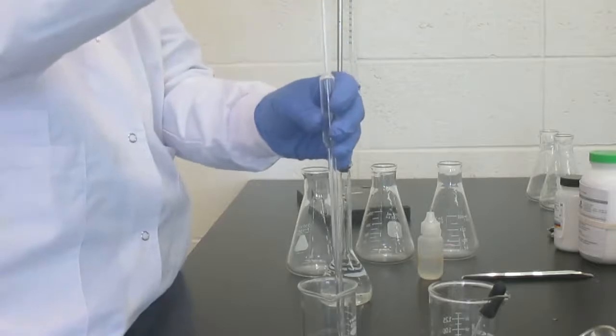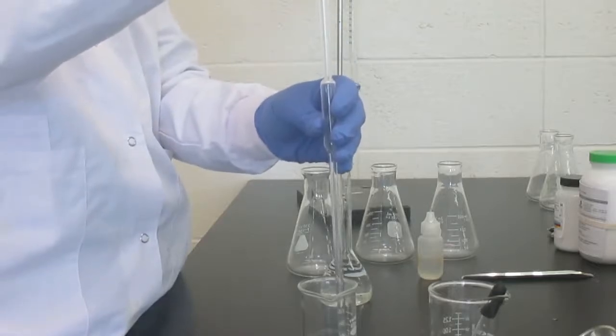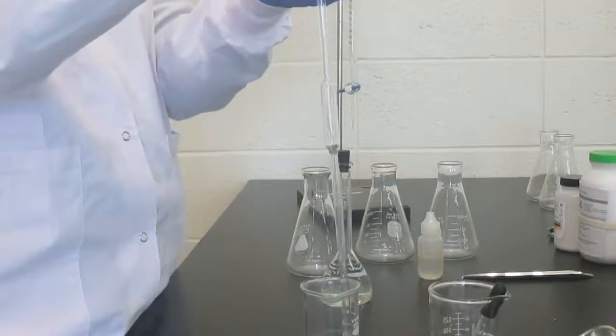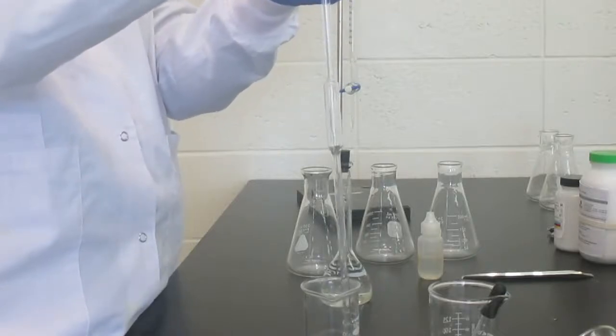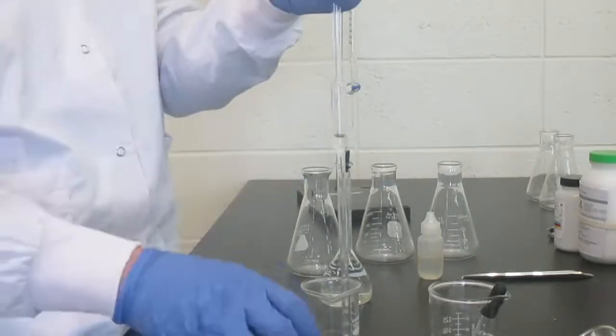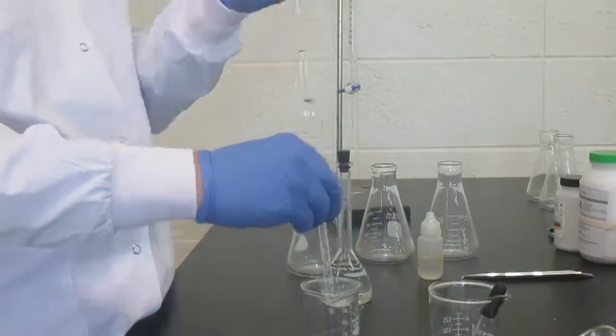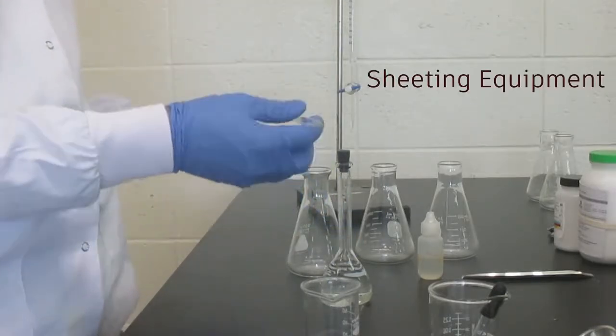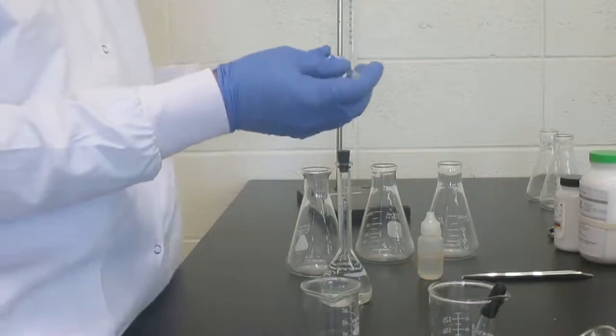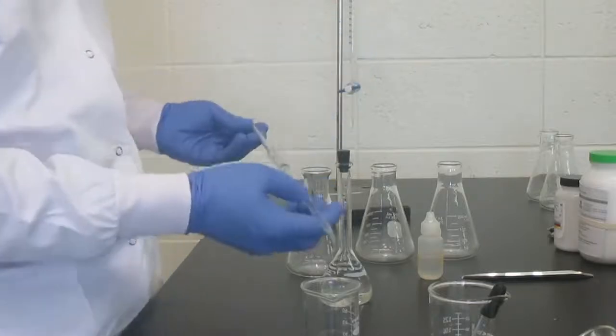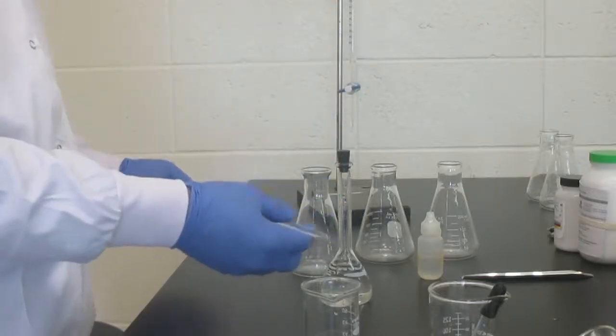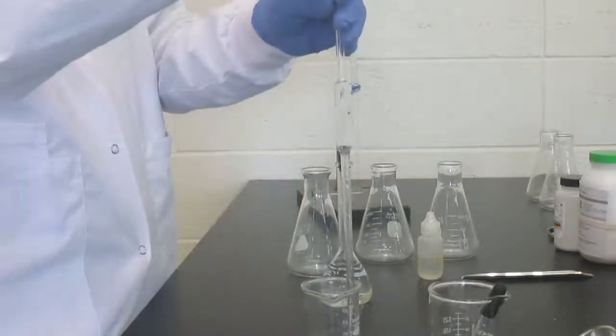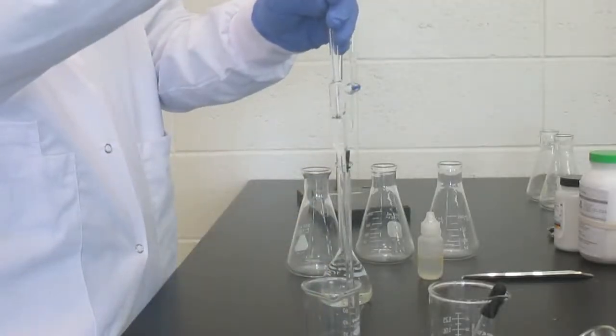I am going to start with getting this pipette about a third or halfway full with some KHP. We are doing what is called sheeting. I'm going to roll around this half full pipette and I'm going to cover the inside with KHP. As a matter of fact, I'm going to pull it even higher, all the way up to the line so that I can get that coated.